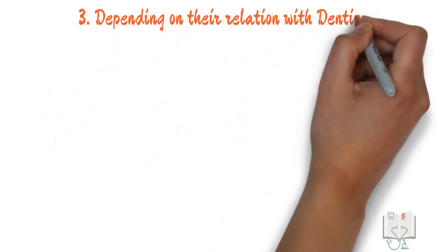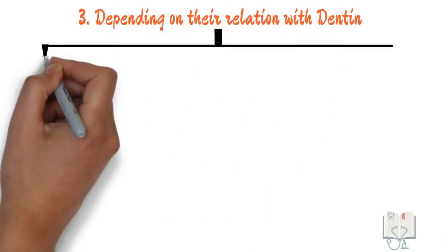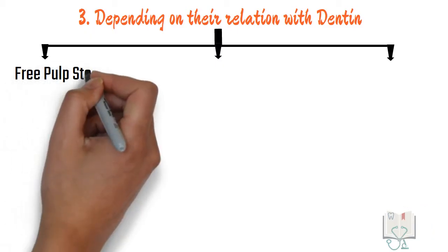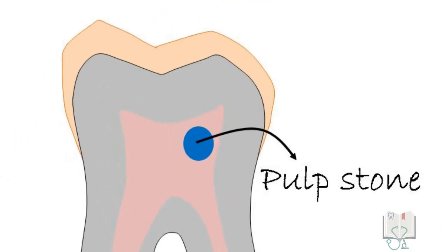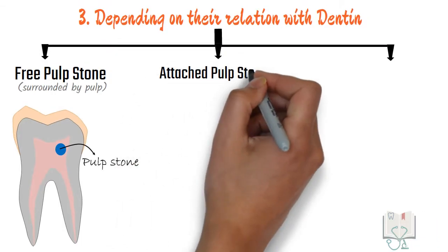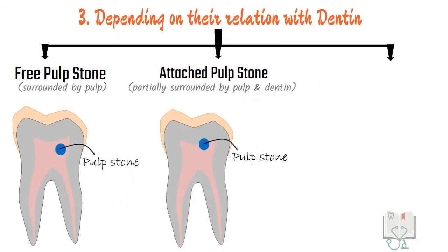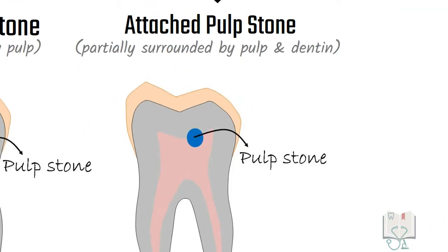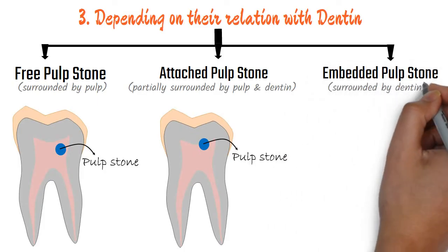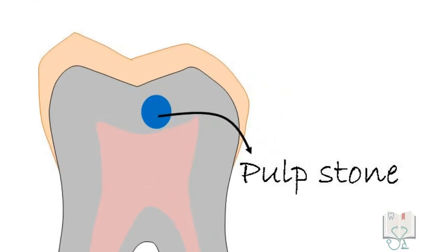Depending on the relationship with dentine, pulp stones can be classified as free pulp stones when entirely surrounded by pulp tissue, attached pulp stones when partially fused with dentine, and embedded pulp stones when entirely surrounded by dentine.